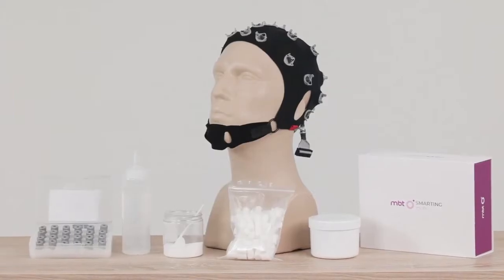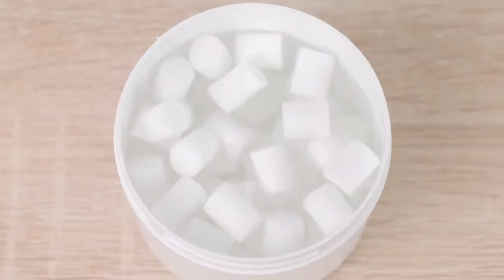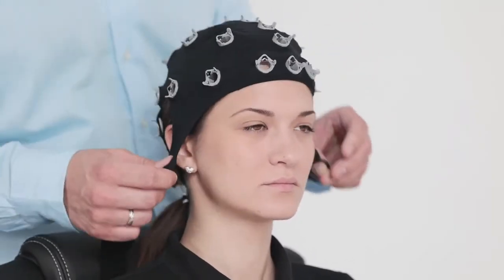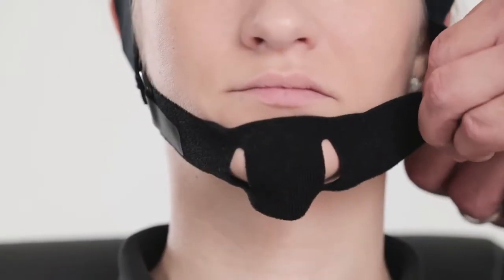In this approach, the empty cap is first placed on the subject's head and then the sponges are mounted. First, mount the electrode cap on the subject's head and gently tighten the strap around the chin.